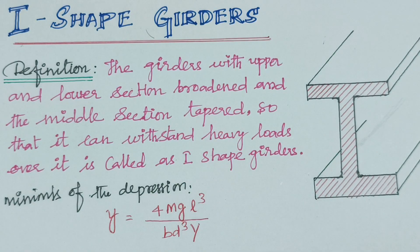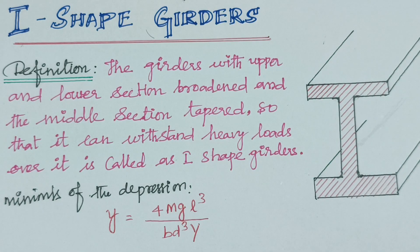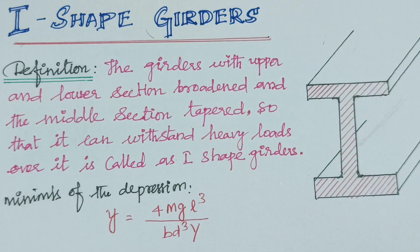However, since the length is fixed, it cannot be decreased. Therefore, we adjust the width B and depth D. By using a large depth and small width, the volume of the girder is increased and the depression produced is reduced.